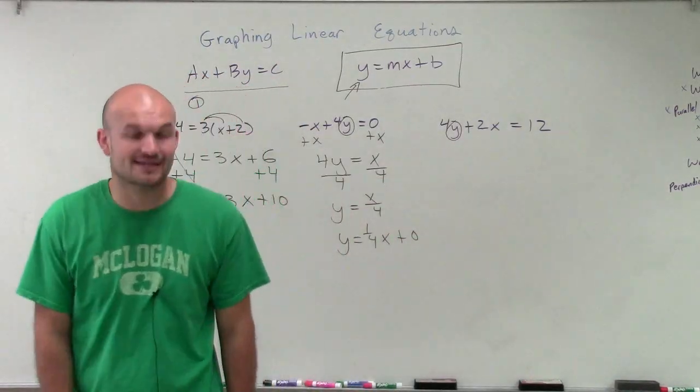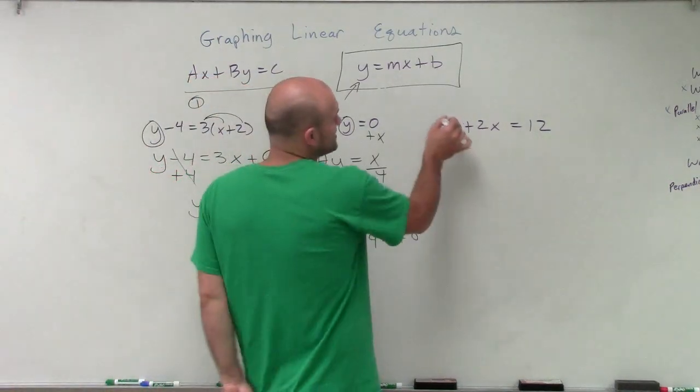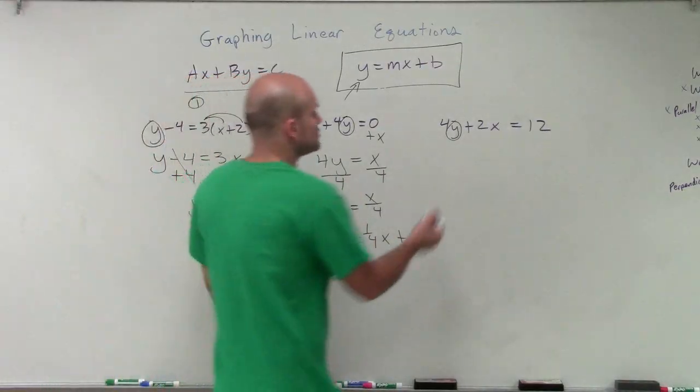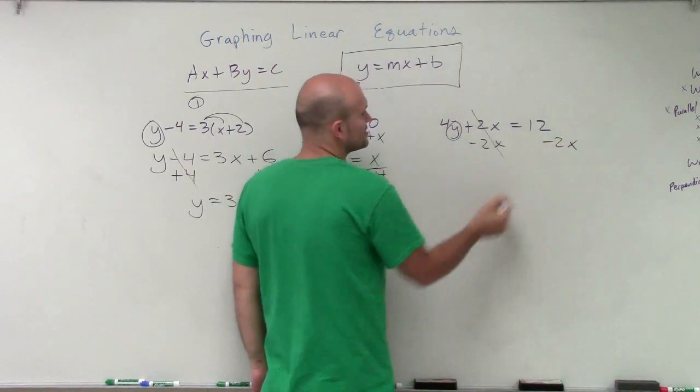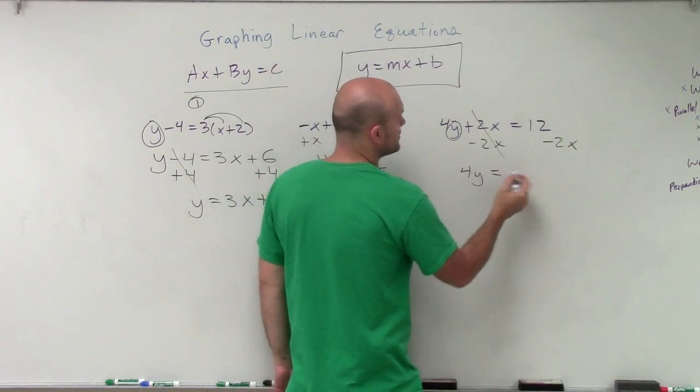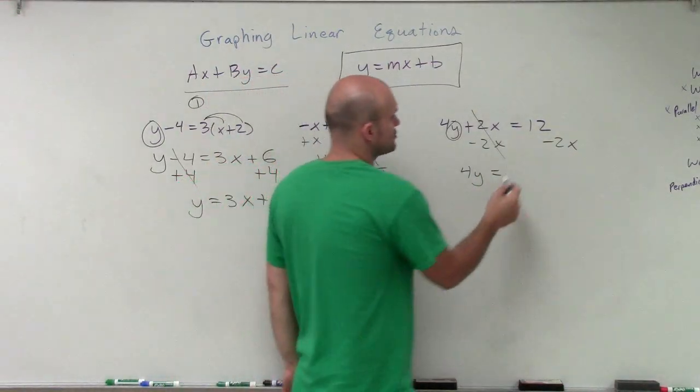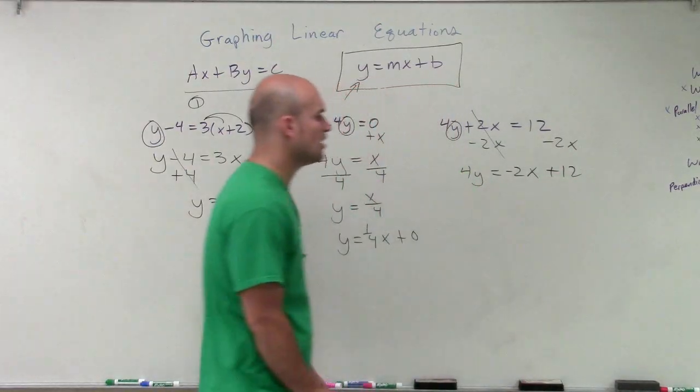And last but not least, now again, I have my x and y on the same side. And again, I just need to isolate my y. Now, remember, we always undo addition and subtraction first. So therefore, I'm going to subtract the 2x on both sides. Now, this is going to add up to 0. So I'll be left with 4y equals. I cannot subtract a 2x from 12. So I'm going to rewrite this as negative 2x plus 12, since that 12 is positive.